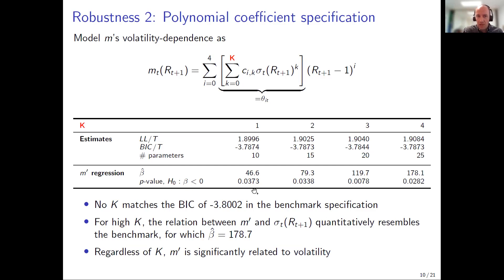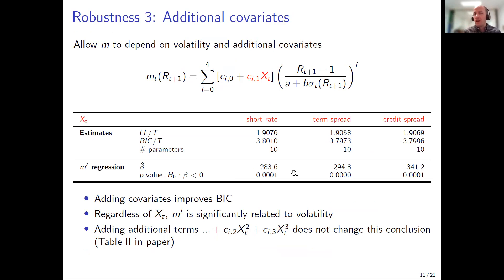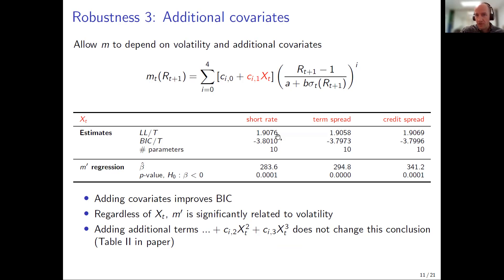Third robustness test: does volatility still have a significant effect when we allow other macro time series to also affect the shape of the pricing kernel? We use our old specification but allow the coefficient to also be a function of variables X: the three-month T-bill yield, the term spread, and a credit spread measure — standard series from FRED. Including these improves fit in terms of BIC and log likelihood, but volatility still has a significantly positive effect.